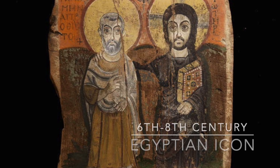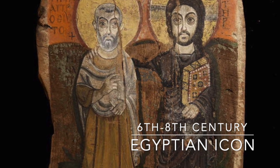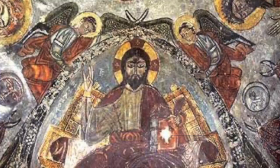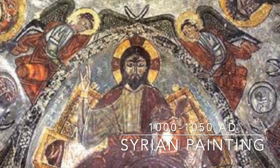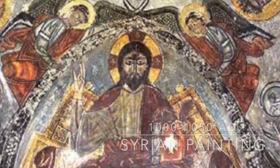For example, look at this icon — almost all of these are icons or paintings. This is an icon from Egypt dated anywhere from the 6th to the 8th century. Does this look like a European Jesus or a symbol of white supremacy? How about this painting, which is of Syrian origin from about 1000 to 1050 A.D.?